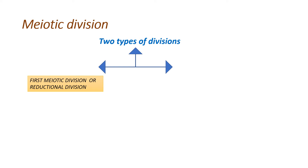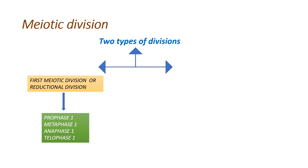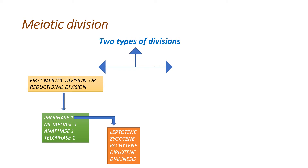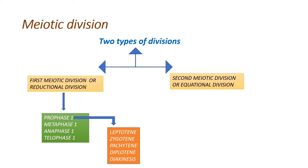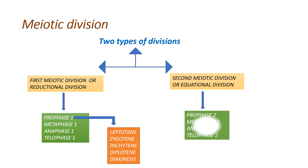Meiotic division involves two divisions: meiosis I and meiosis II. The first meiotic division is also called reductional division, because the daughter cells formed receive only one of the two homologs of each chromosome. It occurs in stages: prophase I, metaphase I, anaphase I, and telophase I. Prophase I has sub-stages: leptotene, zygotene, pachytene, diplotene, and diakinesis. The second meiotic division is called equational division, occurring in prophase II, metaphase II, anaphase II, and telophase II.